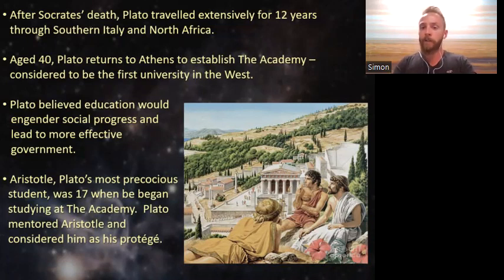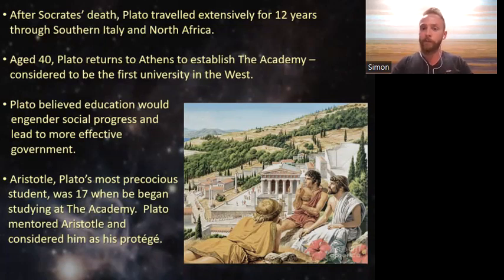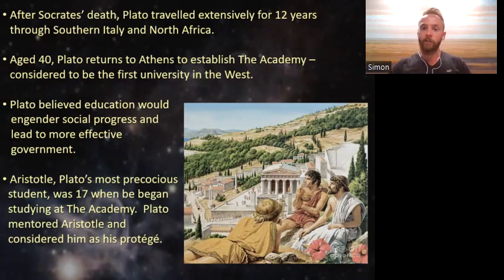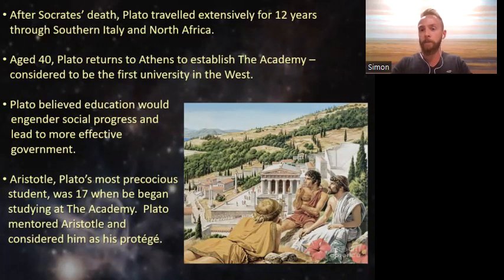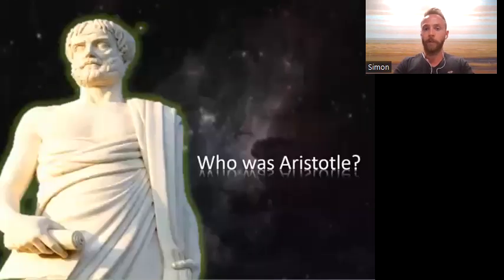Around the age of 40, Plato went back to Athens and opened his own university called the Academy just outside of the city. At the Academy, men were offered the opportunity to take various courses of interest from a wide range of teachers. Plato essentially believed that education would engender social progress among the population and ultimately lead to a more effective form of government. Plato's Academy is considered by many to have been the first university in the Western world, and it continued as an institution for approximately 300 years after Plato's death in 347 BC. Aristotle, perhaps Plato's most well-known student, was 17 when he began his study at the Academy; Plato recognized his incredible potential and allowed him to study directly under his tutelage.